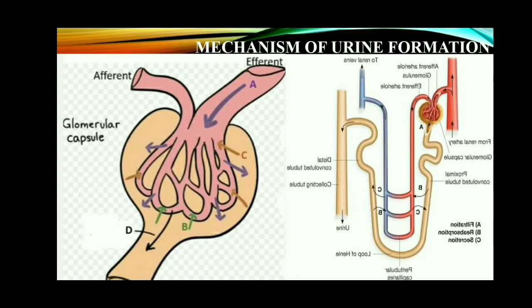The second stage is tubular reabsorption. When the glomerular filtrate passes through the proximal convoluted tubule, the essential substances such as glucose, amino acids, vitamins, sodium, potassium, bicarbonates, and water are reabsorbed into the blood. So tubular reabsorption takes place in the proximal convoluted tubule, where these essential substances from the filtrate are reabsorbed back into the blood.